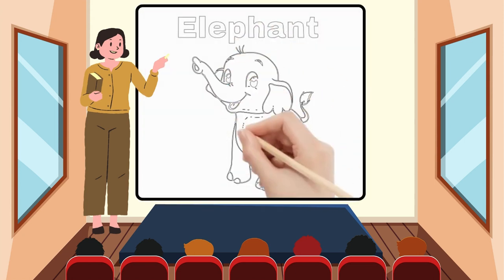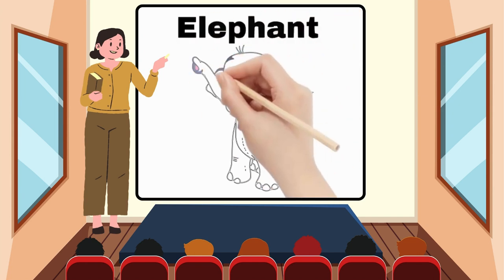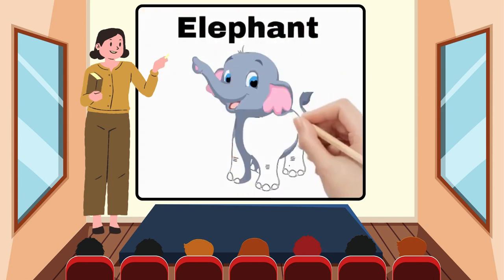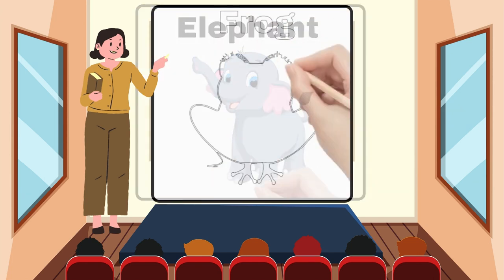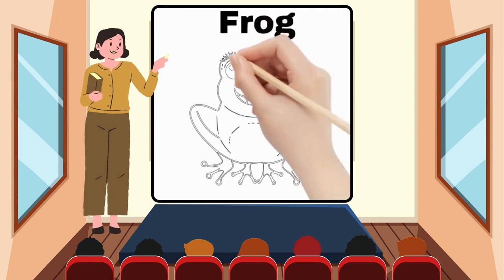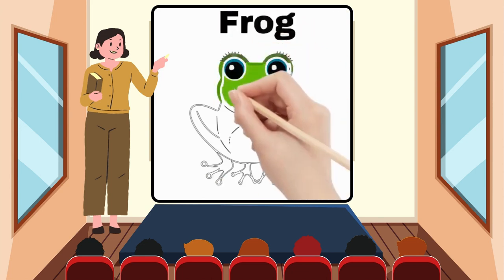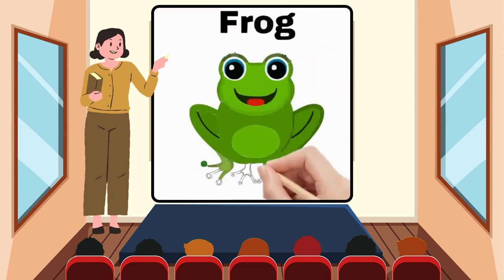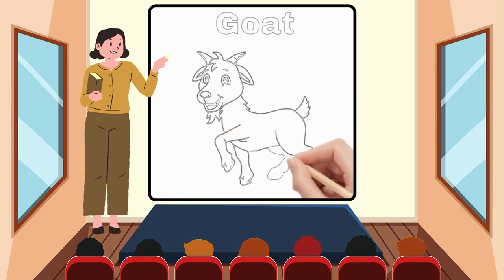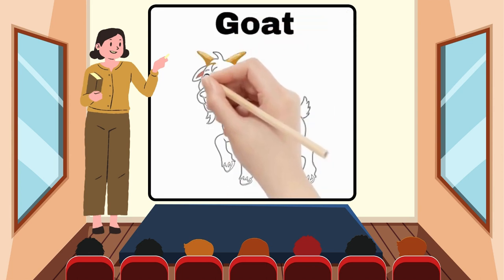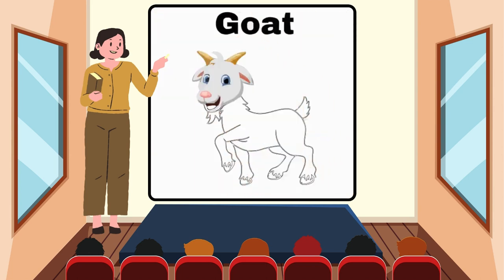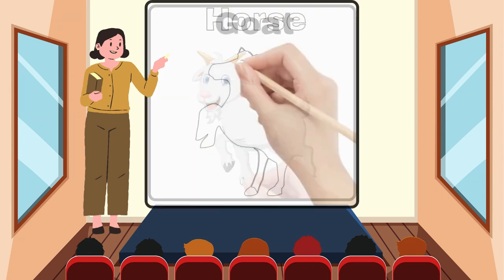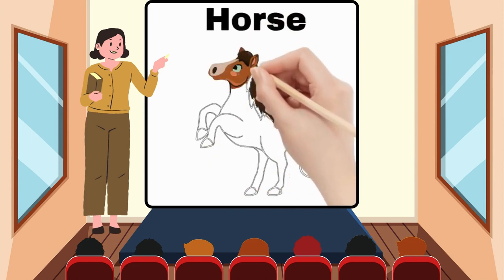E for Elephant. F for Frog. G for Goat. H for Horse.